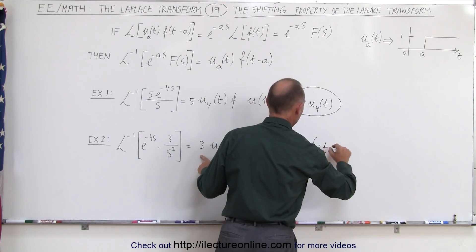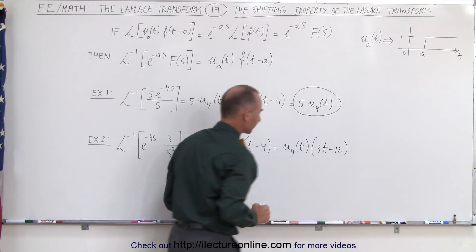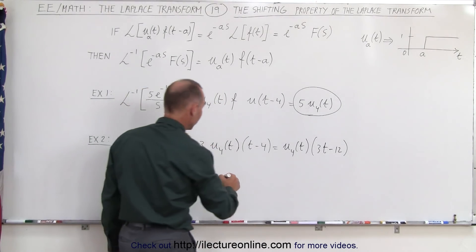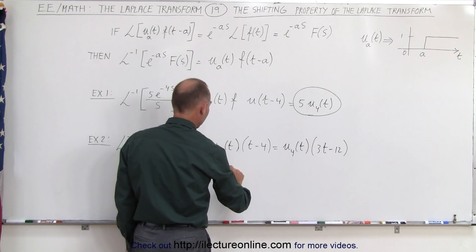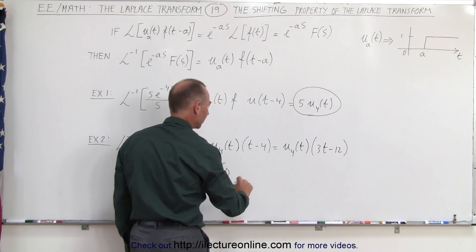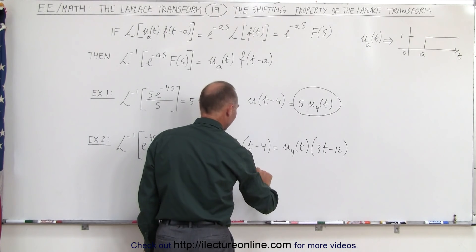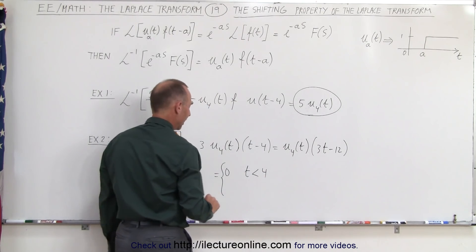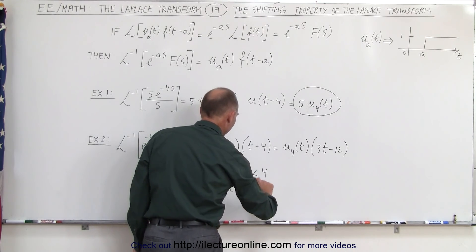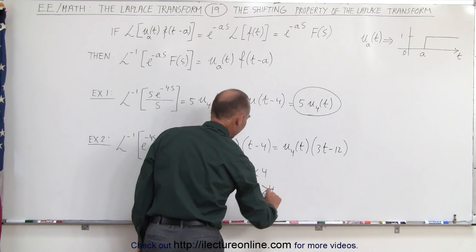Which means that the function, the result is that it is equal to 0, and of course there's two possibilities: for time that's less than 4 seconds, and it's equal to 3t minus 12 for time greater than 4 seconds.